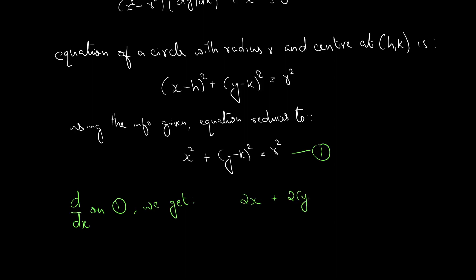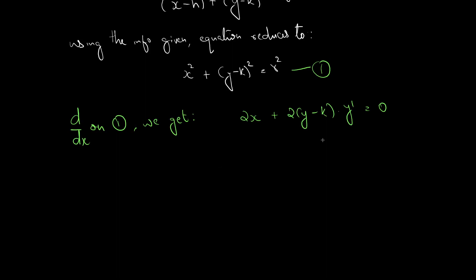Applying d by dx on equation 1, we get: 2x plus 2 times y minus k into y dash equal to 0. We can write y minus k equal to minus x divided by y dash. Let this be equation 2.